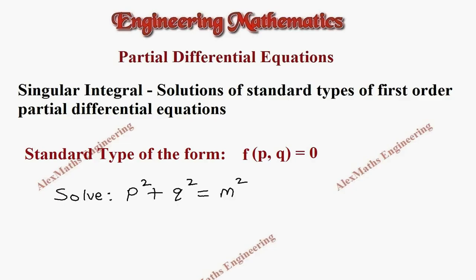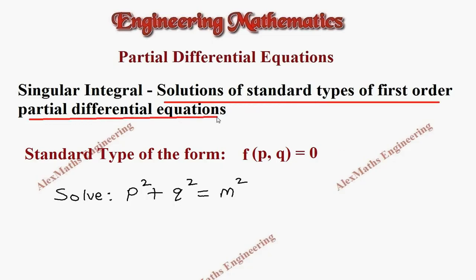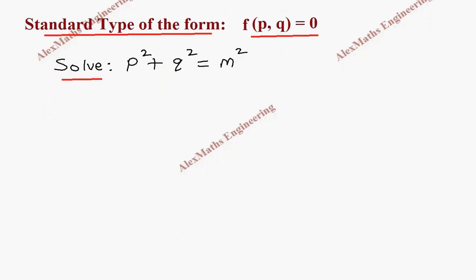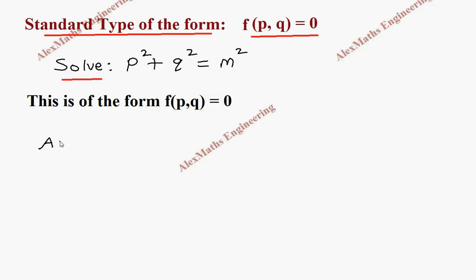Hi students, this is Alex. In this video we are going to find the solutions of the standard types of first order partial differential equations. The standard type we are going to consider is f(p, q) = 0. Coming to the question: solve p² + q² = m², where the equation is in terms of only p and q, and m is a constant. Since it is of the form f(p, q) = 0, we are going to assume the solution in a specific form.